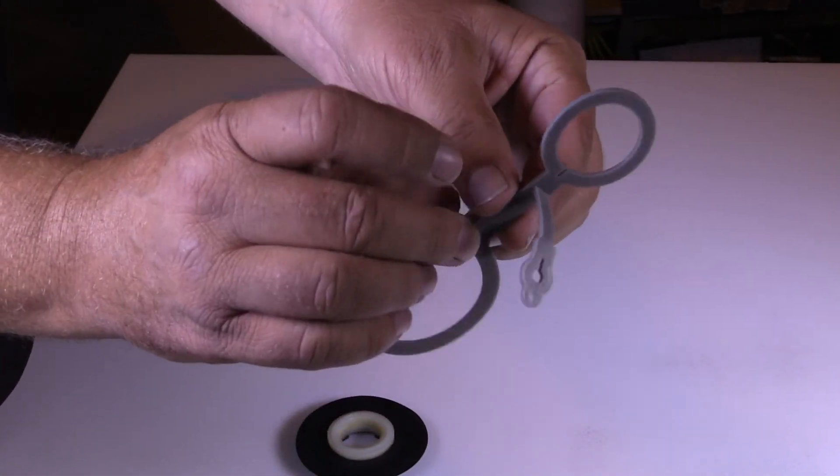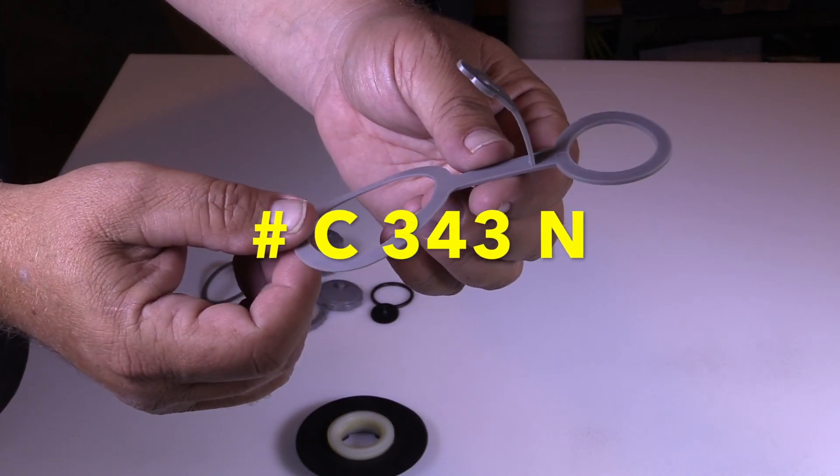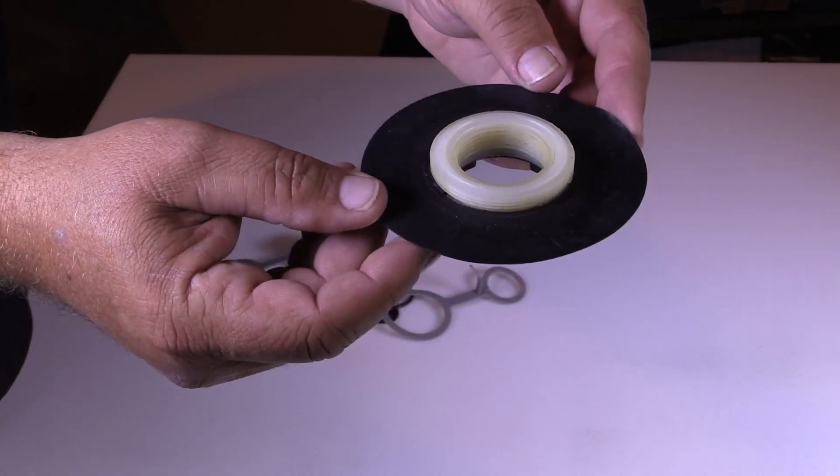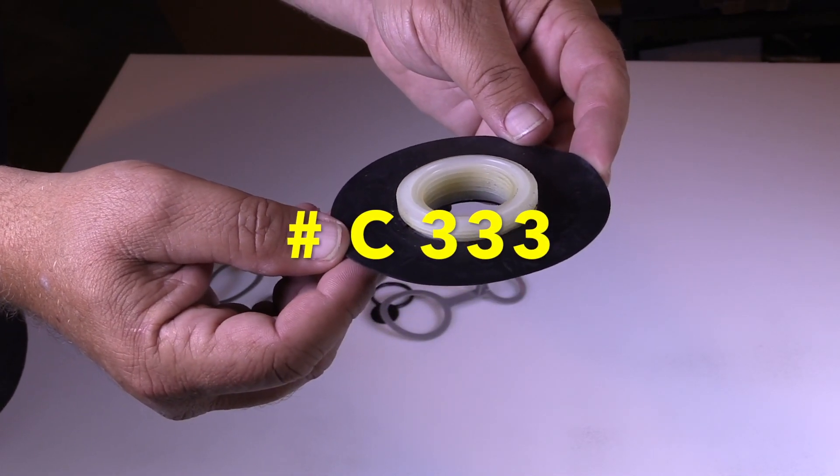The valve strap is part number C343N. The valve base that's glued into the boat is part number C333.